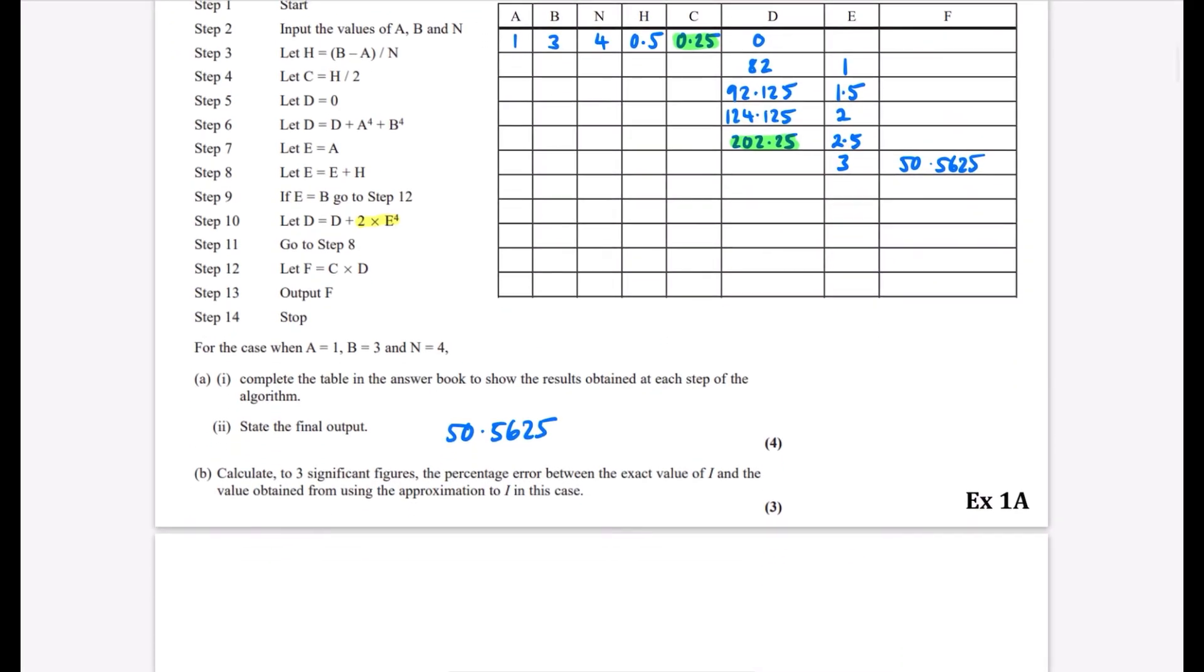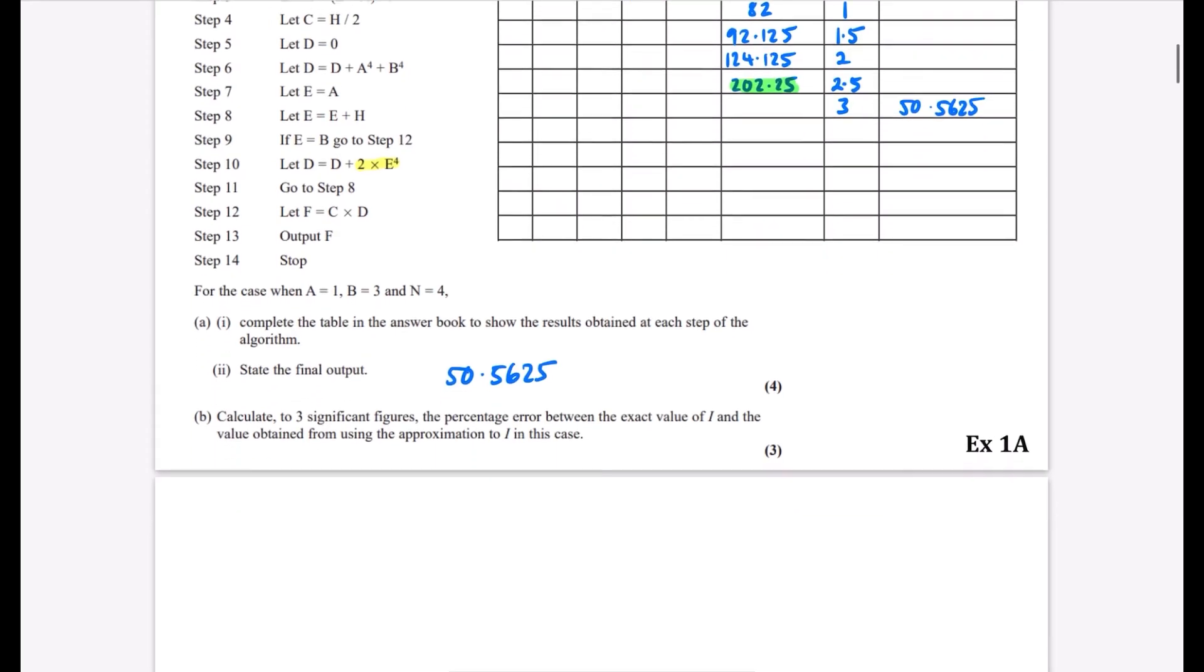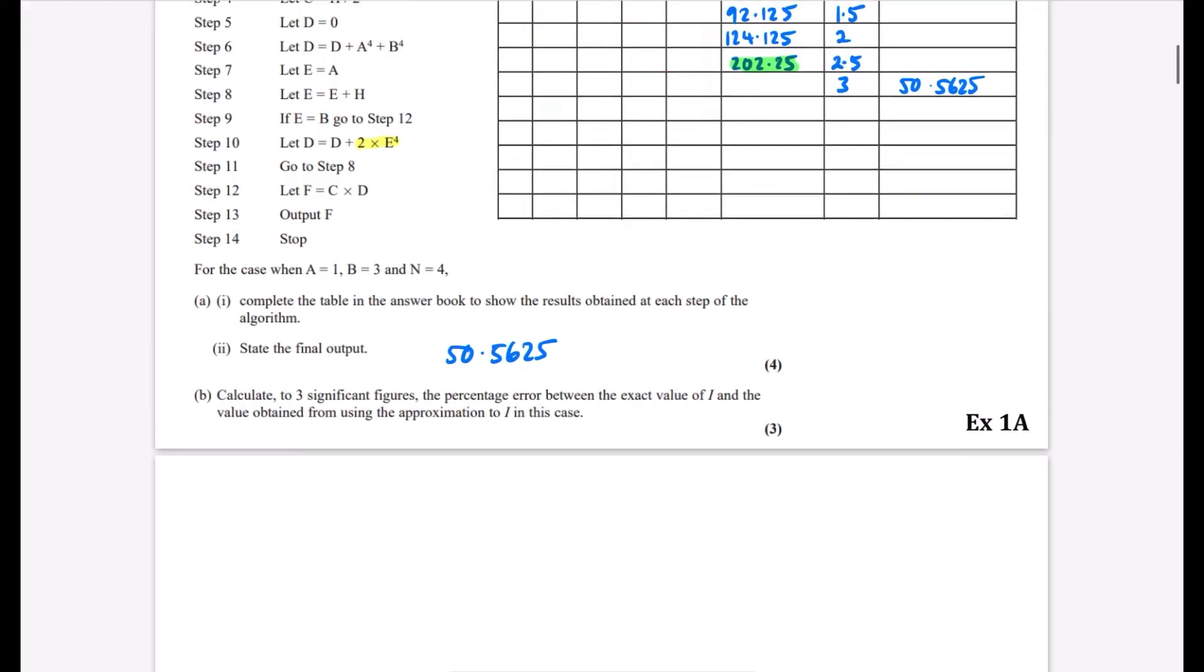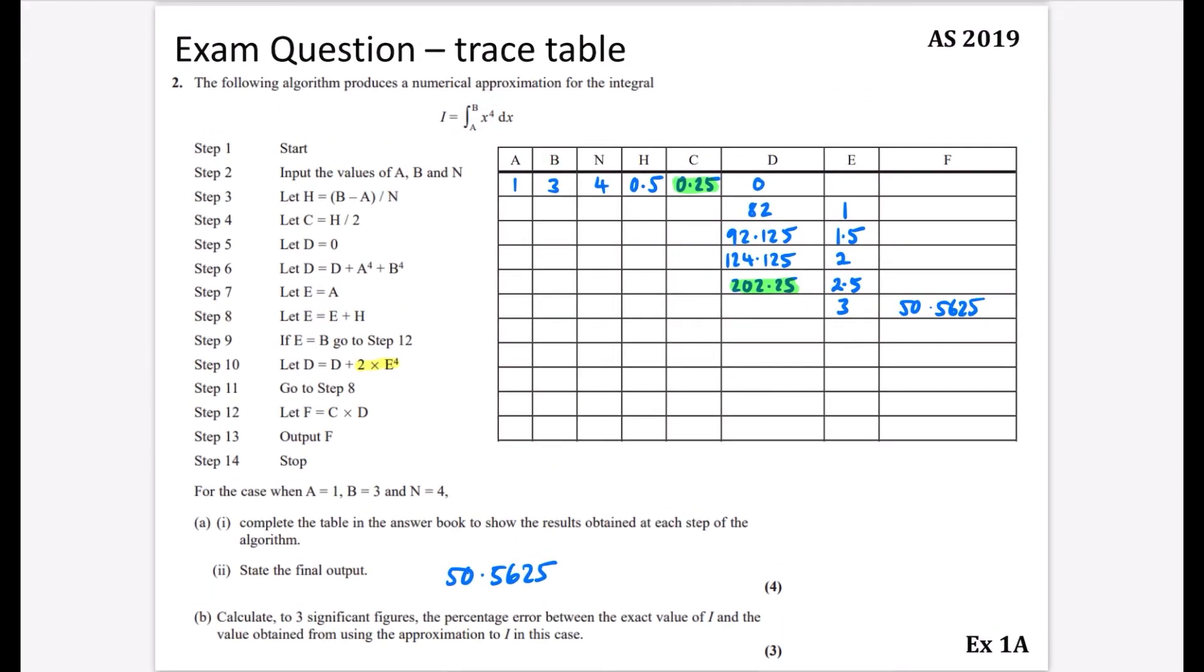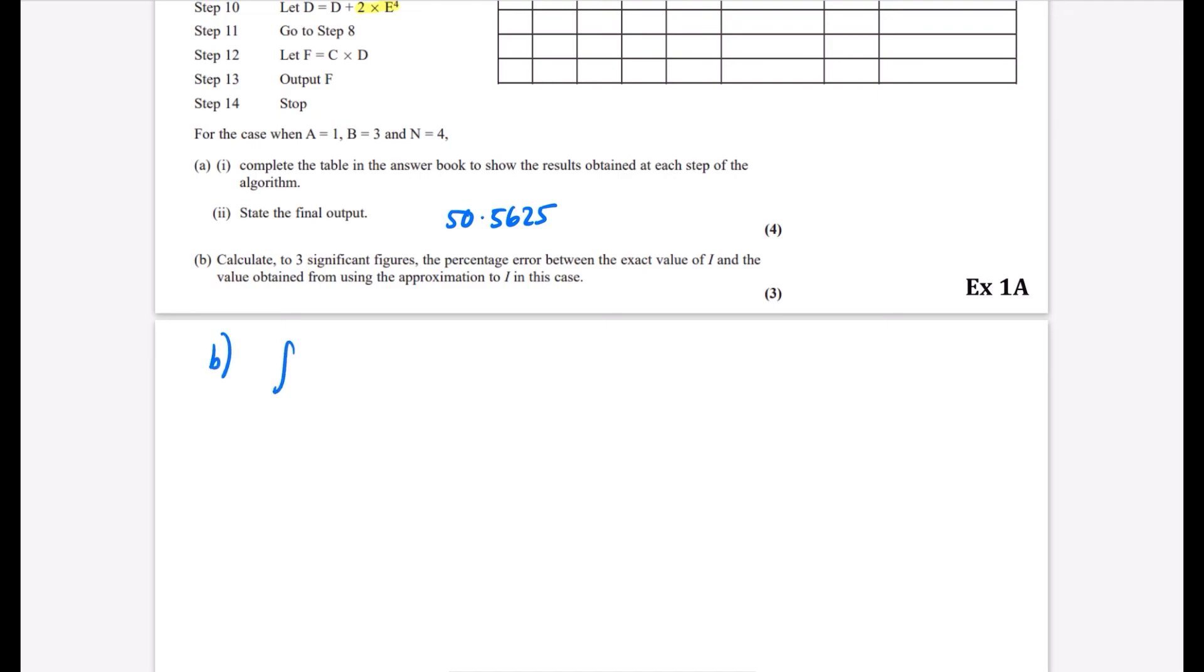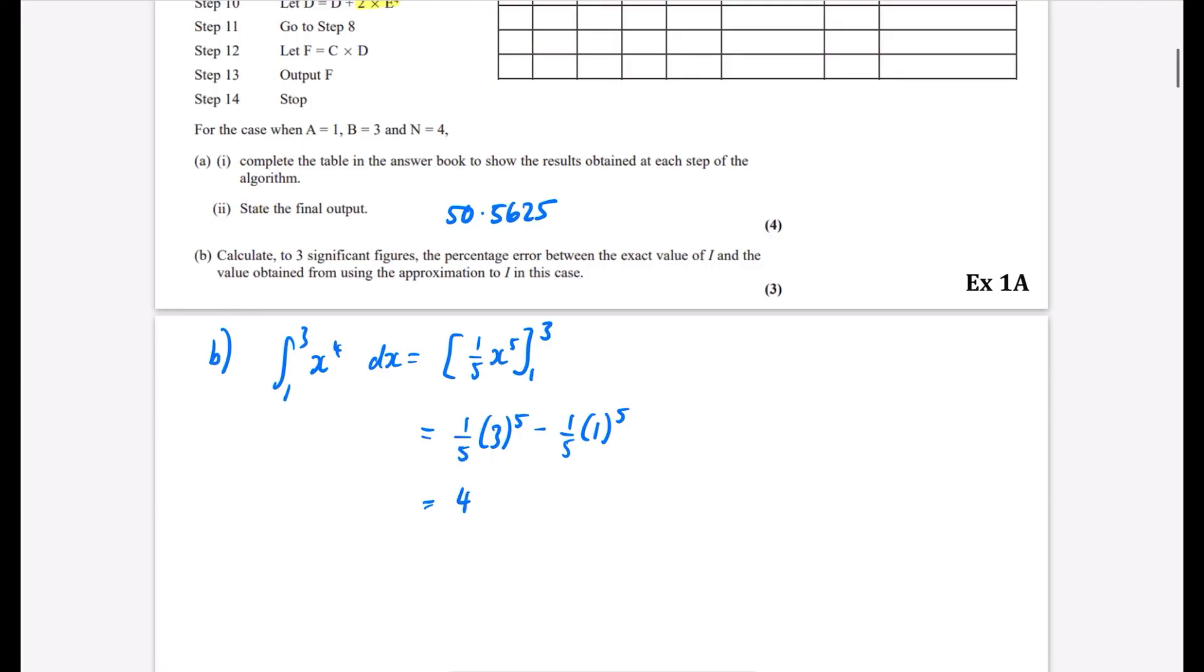For part B, calculate to three significant figures the percentage error between the exact value of I and the approximation. This whole process was trying to find an approximate answer for integrating x to the fourth from 1 to 3, and we got approximately 50.5625. For part B, I'll find the true answer. Integrating gives one-fifth x to the fifth between 1 and 3. That's one-fifth of 3 to the fifth minus one-fifth of 1 to the fifth. So 3 to the fifth divided by 5 minus 1 to the fifth divided by 5, which gives 48.4.